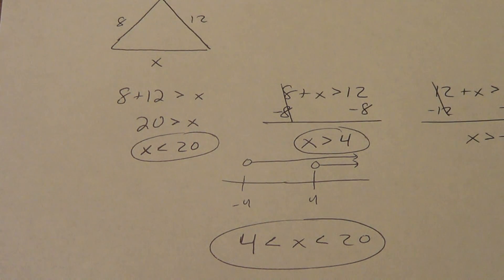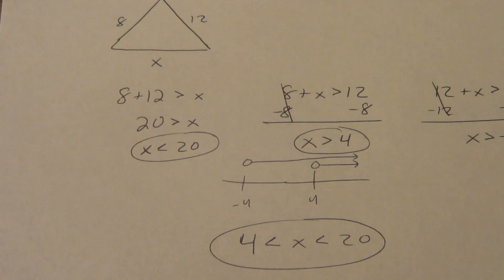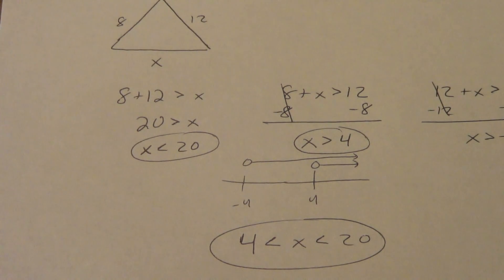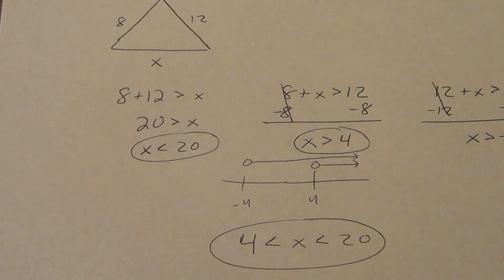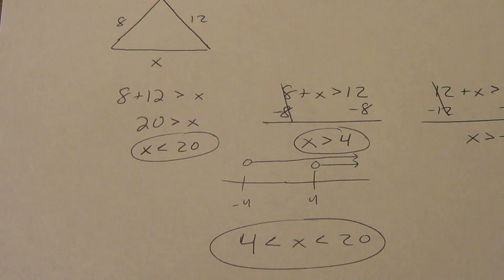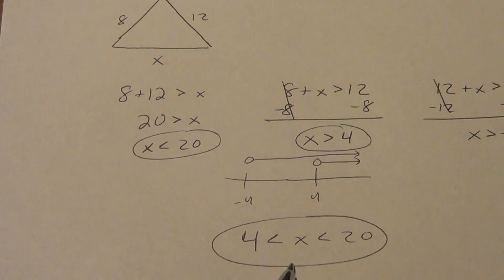Don't write your answer by listing 5, 6, 7, 8, 9, 10... all the way to 19, because you've left out all the fractions and decimals. It might be 4.7, or 19.8, or 19 two-thirds, or 11 and a half. So don't just list numbers — write your answer in inequality form.